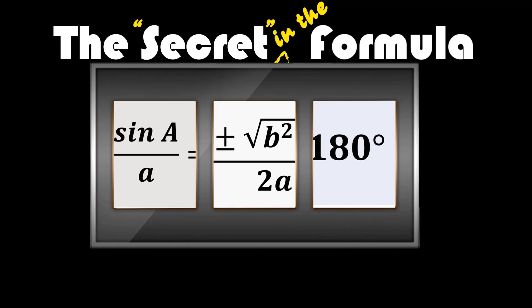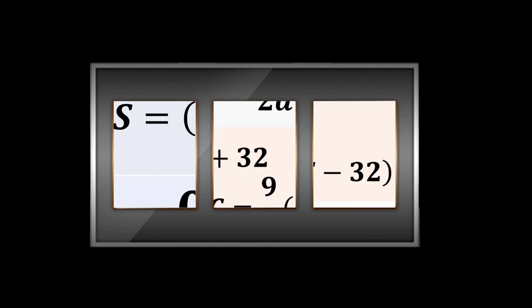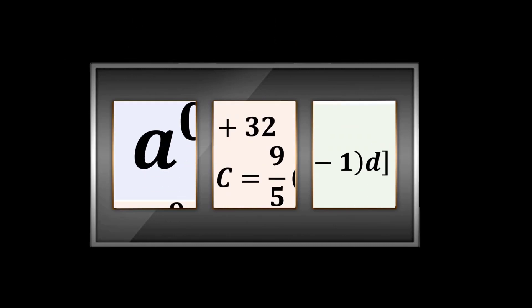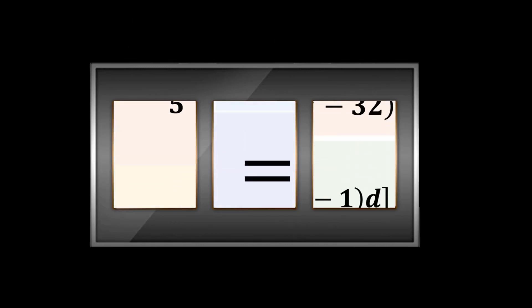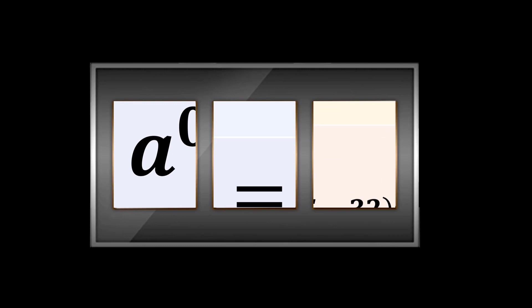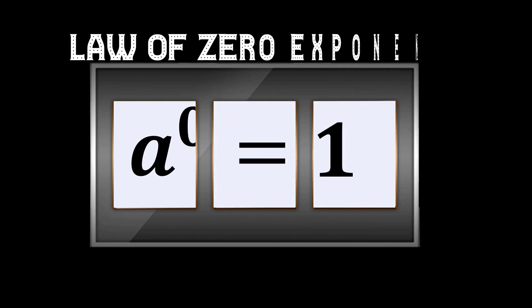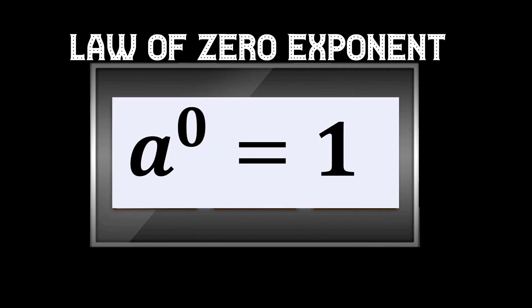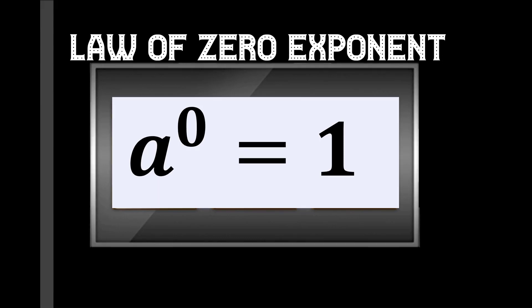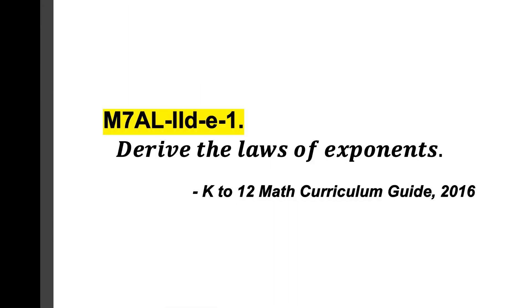What formula are we going to derive in this video? We are going to talk about the law of zero exponent, stating that any term expressed with an exponent of zero is equal to one. And how is this possible? This video captures one of the competencies in the K-12 Curriculum Guide which states that students should be able to derive the laws of exponents.